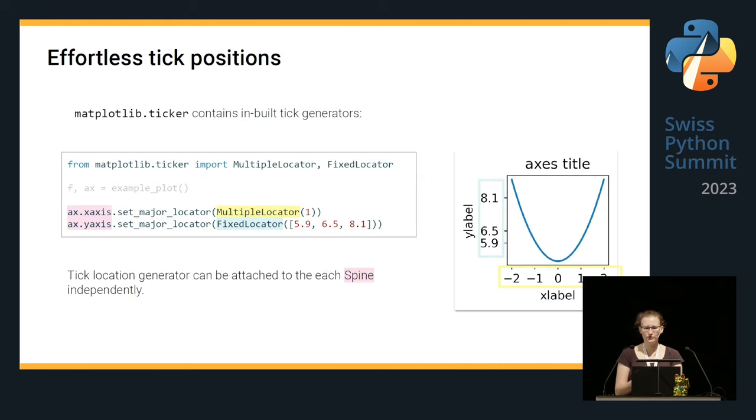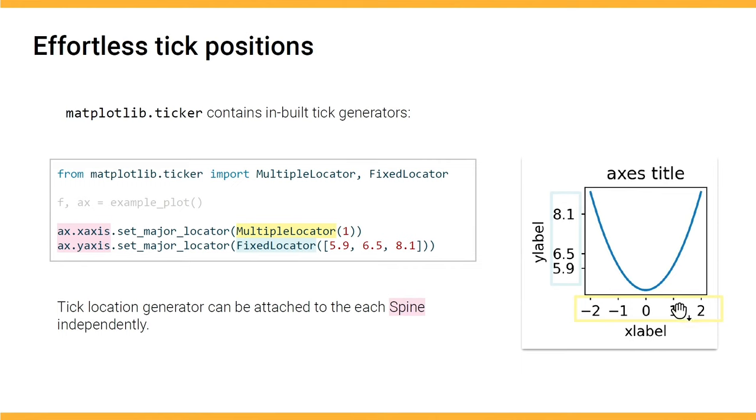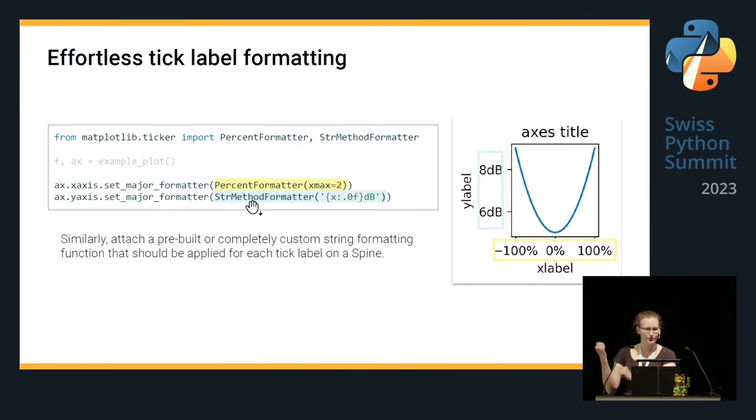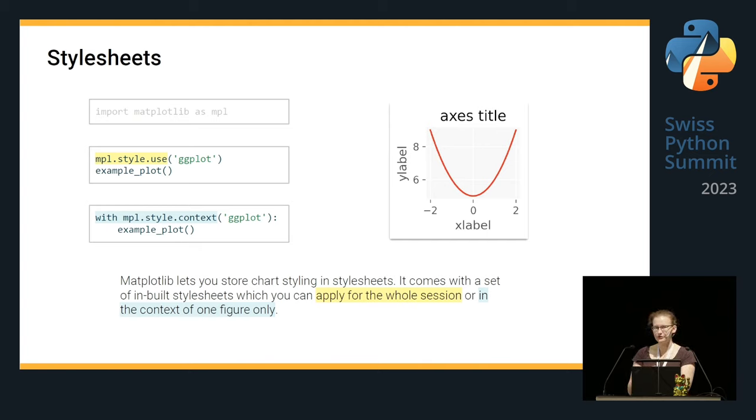Something that should be much more known is a ticker submodule of Matplotlib. Because it lets you modify your tick positions in a very pleasant and effortless way. For example, you can set the repetition of a tick with a particular interval. Or you can set the fixed position of ticks without having to read each of them and to modify and then create your own arrays and feed them as ticks. The same module also creates some generators that let you format the tick labels. So, you can convert them to percentages. Or you can add some particular string or unit after this. There is many more. So, I refer you to the documentation to check it out. It is super useful and makes your code much more readable and compact and efficient.